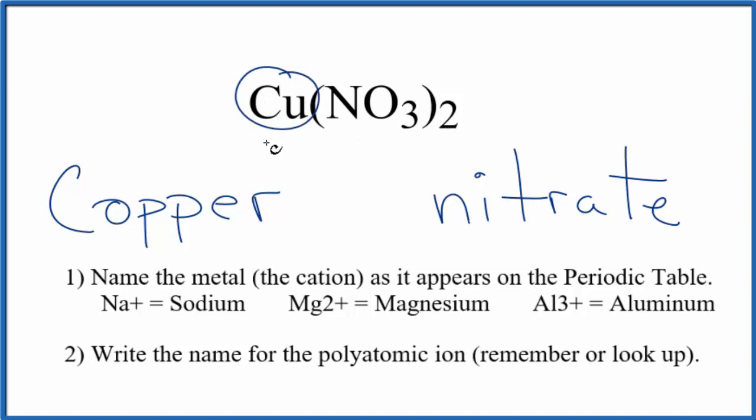But copper, that's a transition metal. So it can have a different charge depending on what it's bonded to. So here it's bonded to these two nitrate ions.